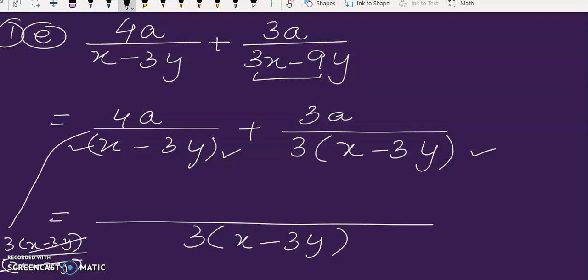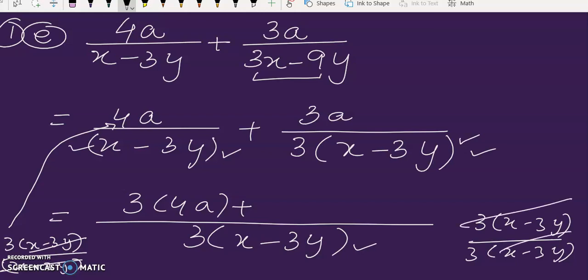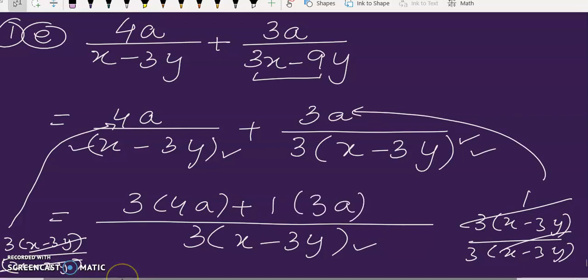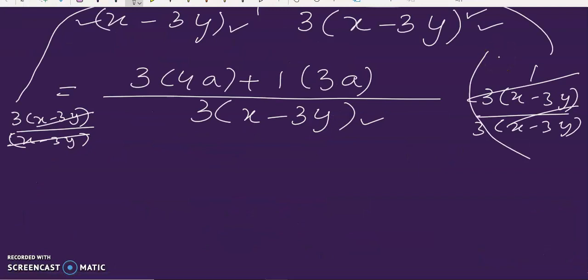So we multiply 3 with 4a, then plus sign. Now we divide the LCM with this denominator, we get 1. So when we multiply 1 by 3a. Now remember this is the scrap work over here.